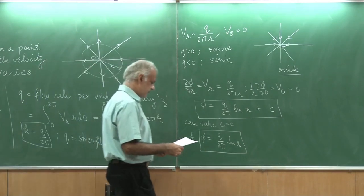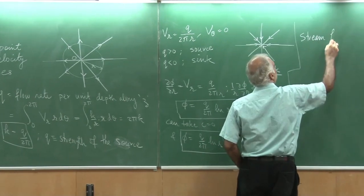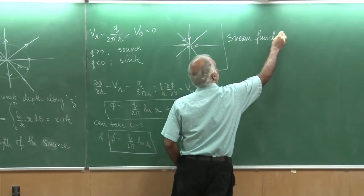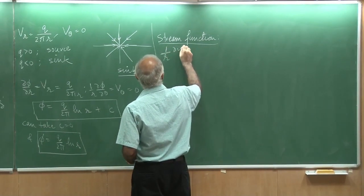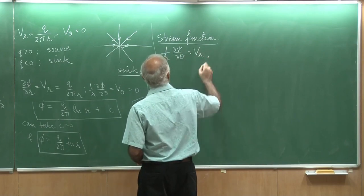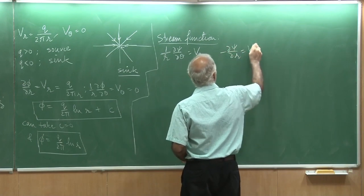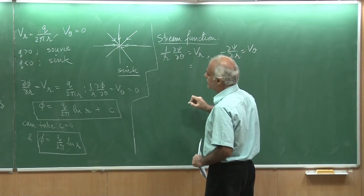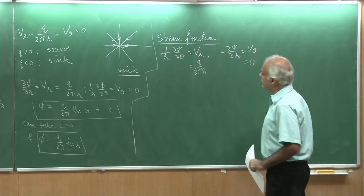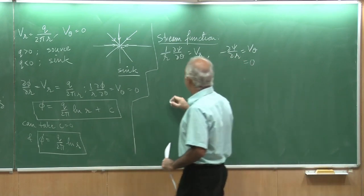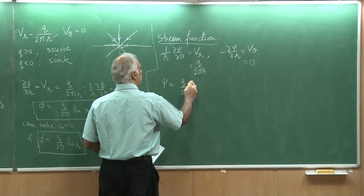What about my stream function? The stream function can again be done in the following manner. If I do 1 by r del psi by del theta, that is my vr, and minus del psi by del r would give me v theta. I know my vr is simply q by 2 pi r, and this of course is 0. Again, I can integrate these two equations and get a psi out of it, put the constant as 0, and that would turn out to be q over 2 pi times theta.